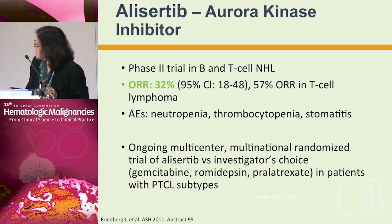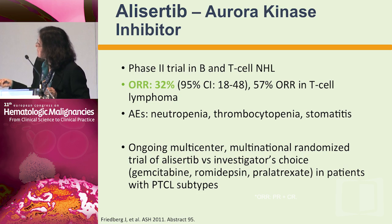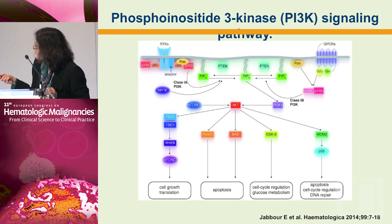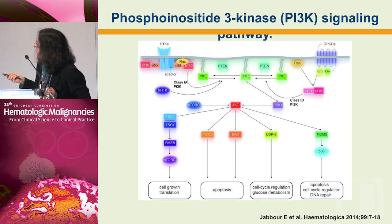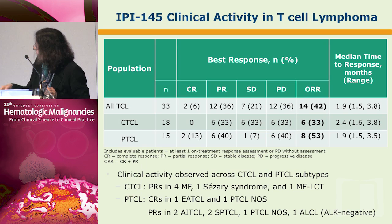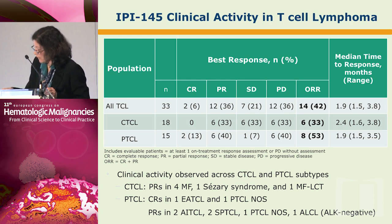Another new agent is the aurora kinase inhibitor alisertib, which had responses in T-cell patients in early studies. Four of eight patients with aggressive T-cell lymphoma had very nice responses, so this moved to a multi-center study randomizing it against investigator's choice — gemcitabine, romidepsin, or pralatrexate. That study has accrued a significant number of patients and data is being analyzed. PI3 kinase inhibitors have also been explored; the one used in T-cell lymphoma targets both the gamma and delta kinases — IPI-145 — and responses were seen in aggressive T-cell lymphoma as well as cutaneous T-cell lymphoma.